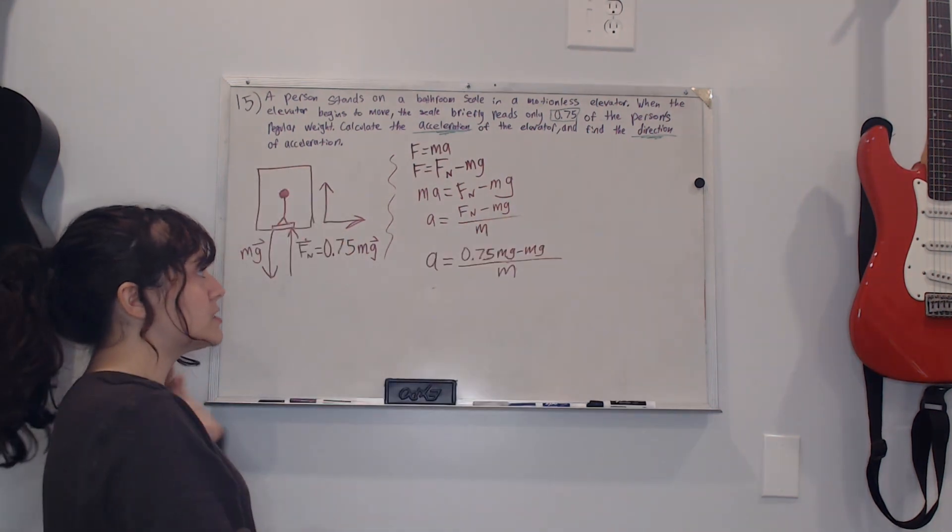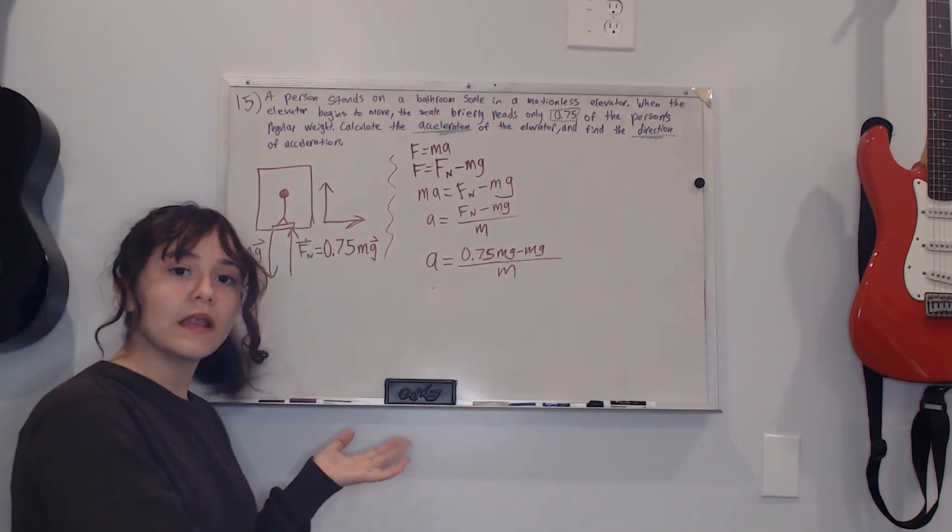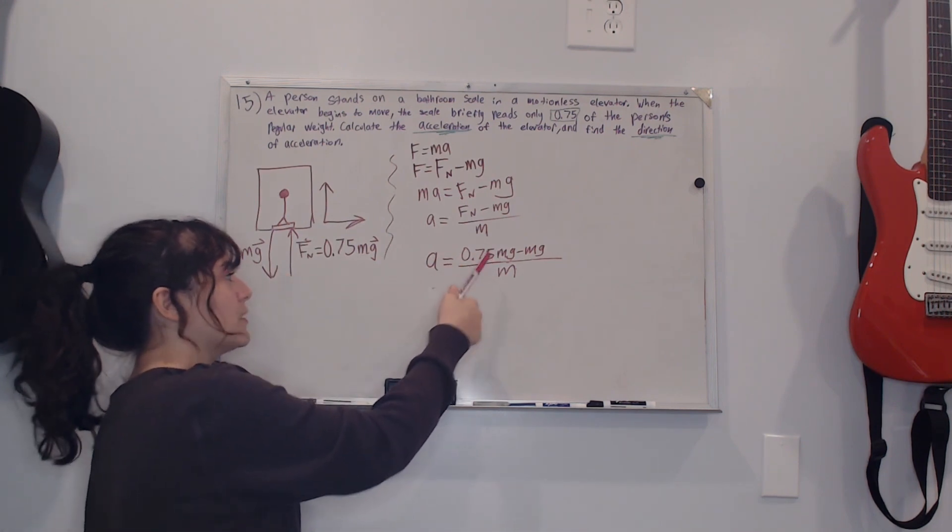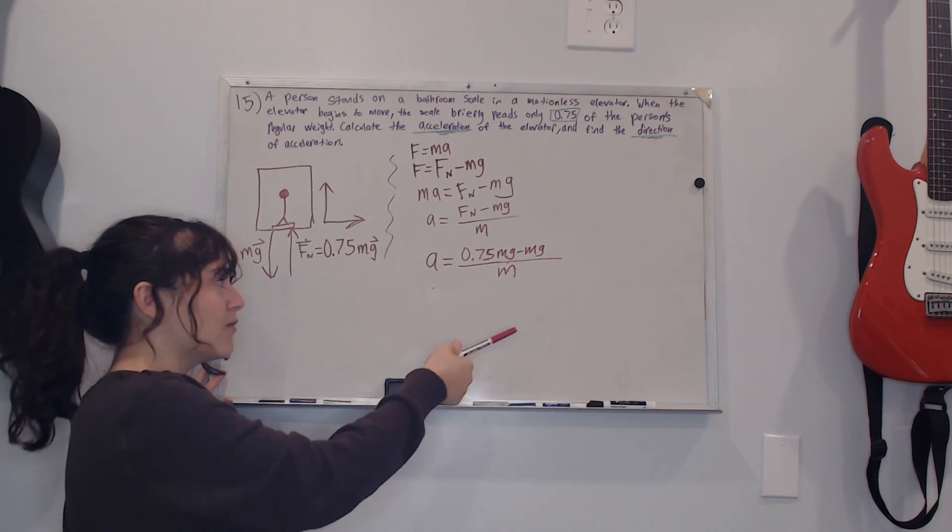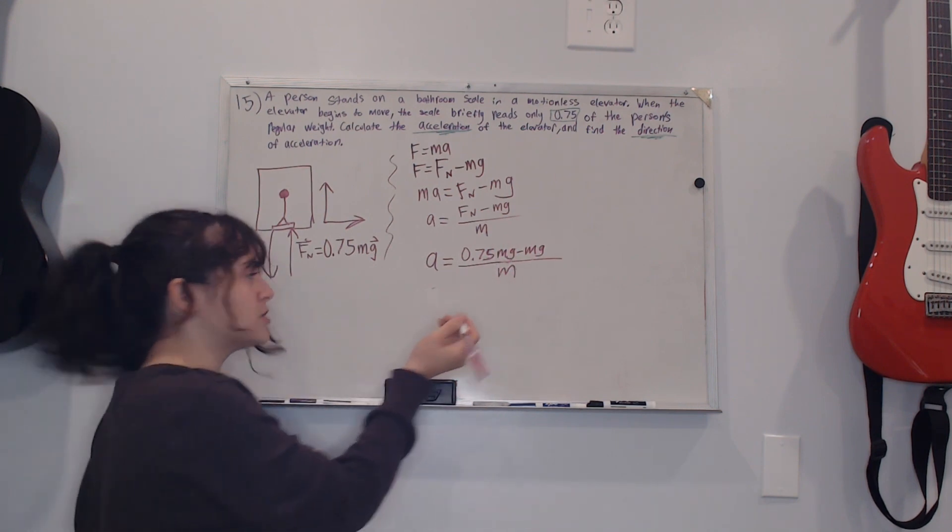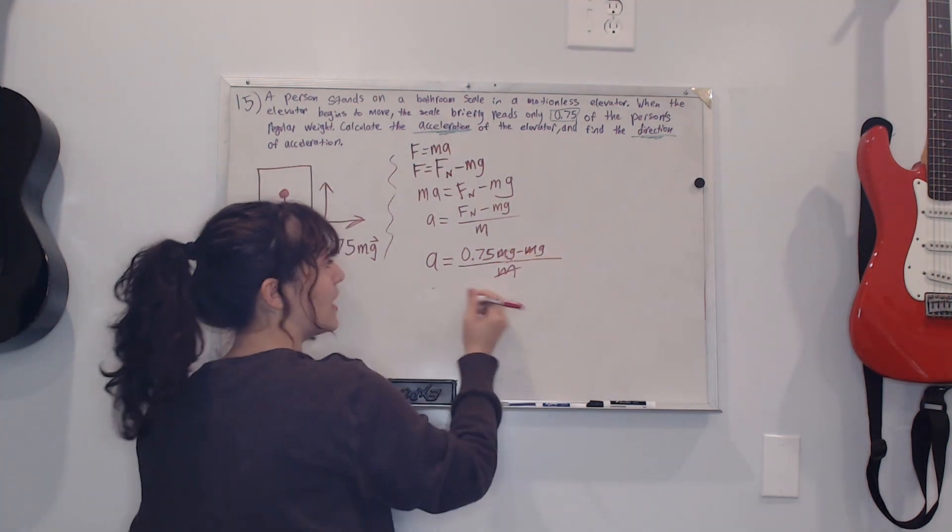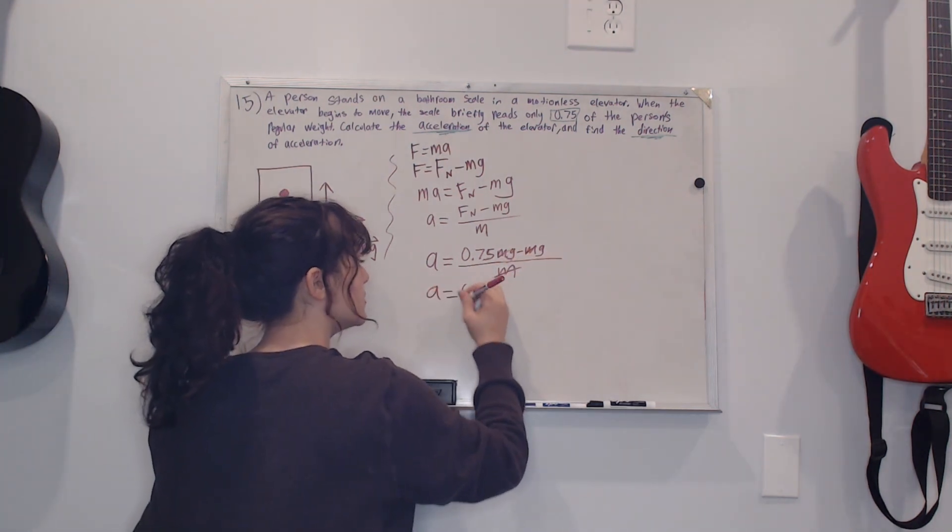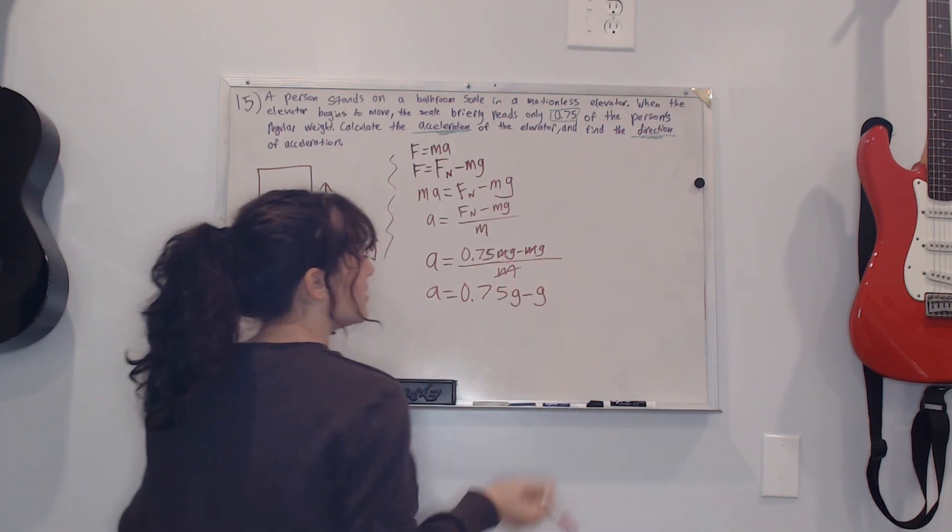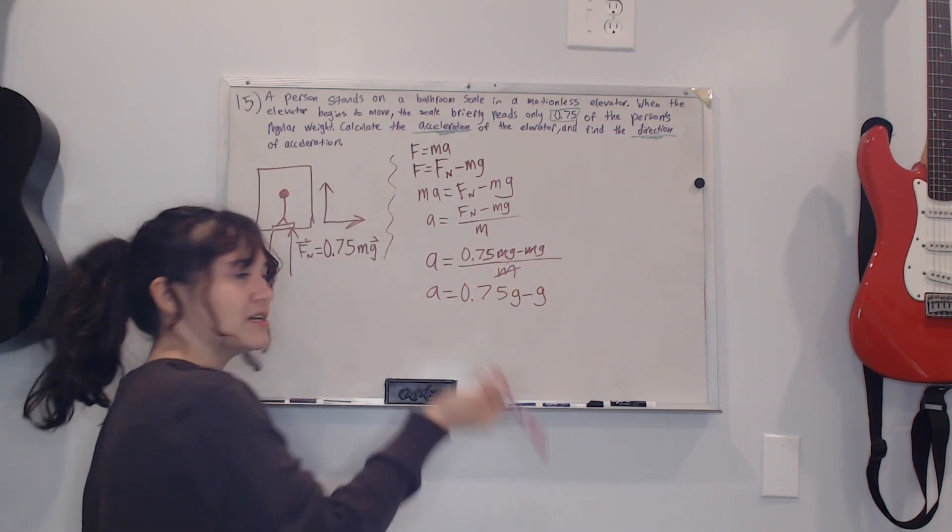After that we can start plugging in the values that we have, but we only have the normal force. I already plugged it in and I can tell that every single one of the parts has m so we can just cross them off, they cancel out, and we rewrite it a equals 0.75g minus g, and g is our gravity.